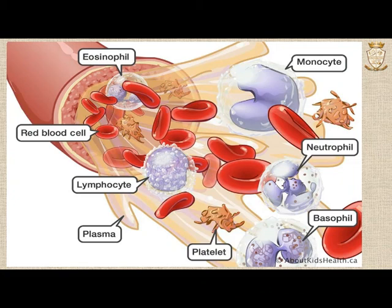Blood contains plasma, red blood cells, and various white blood cells such as eosinophils, monocytes, neutrophils, lymphocytes, and basophils. Blood also contains platelets or thrombocytes.